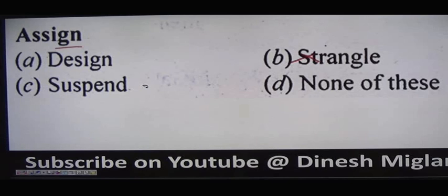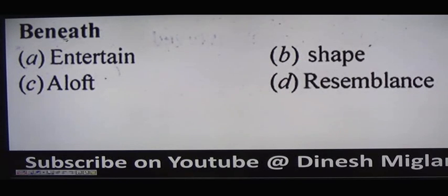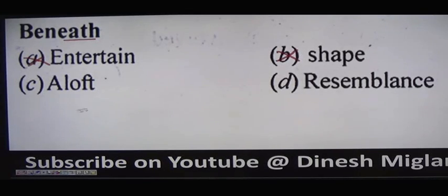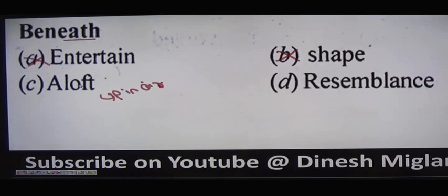Next word: 'beneath.' Beneath means to extend below something or to grow beyond. Option A is 'entertain,' meaning to provide amusement or excitement. Option B is 'shape,' meaning to form a thing. Option C is 'aloft,' meaning up in the air or quite high. We can say anything which is below is beneath, and up is aloft — aloft is the antonym. Option D is 'resemblance,' meaning similarity — not our answer. So the answer is option C: aloft.